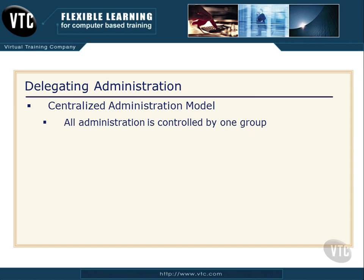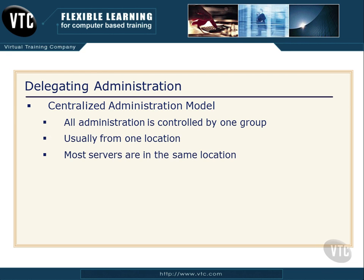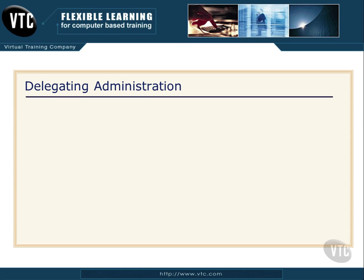The centralized administration model is one where all the administration is controlled by one group. This group is usually all in the same location, all the servers are right there with them, and this is a very efficient model. Everybody's together, everybody gets all the memos the same day, everybody's on the same page, and it's very easy to identify mistakes. However, the centralized administration model usually doesn't match up with the real world.